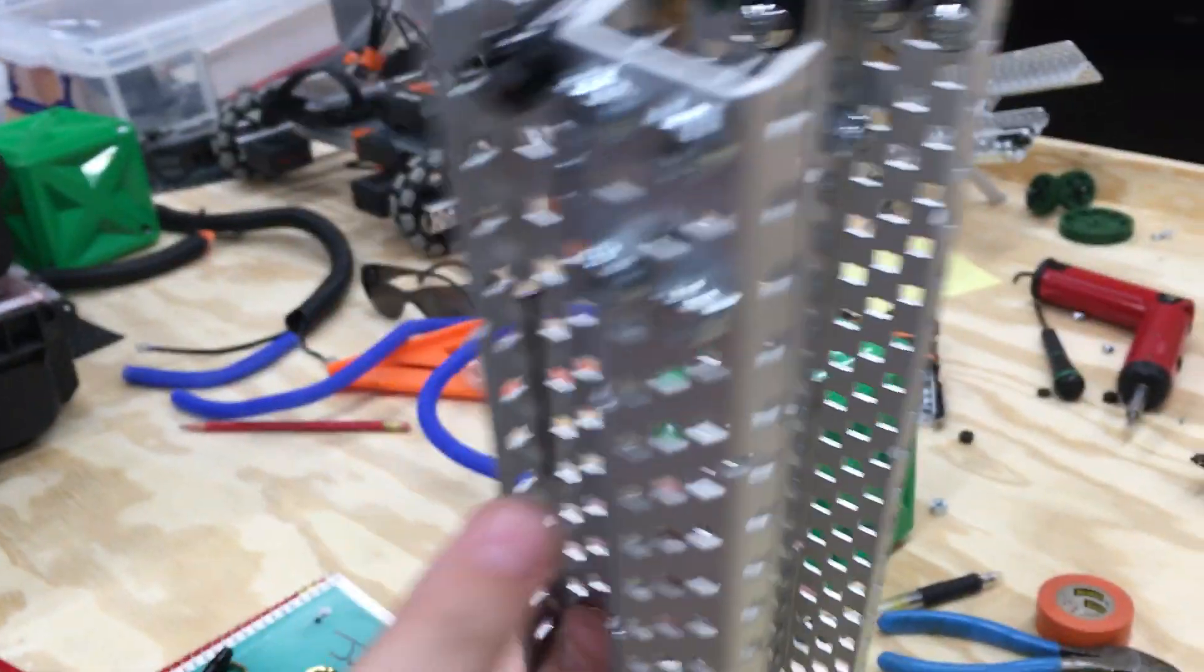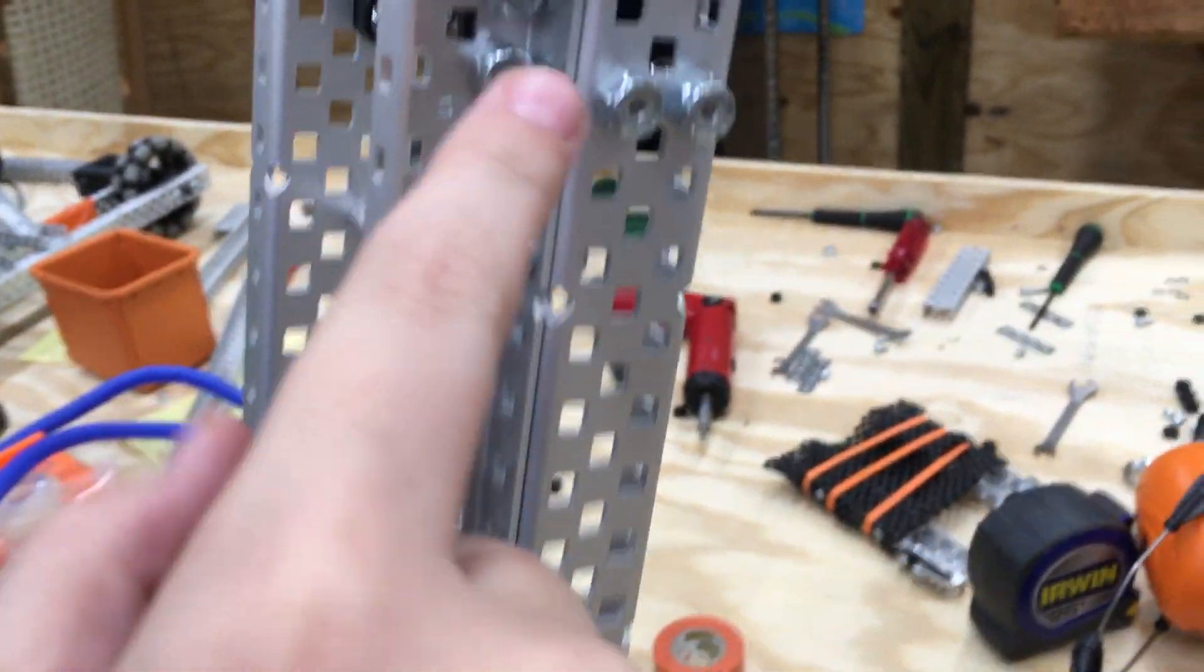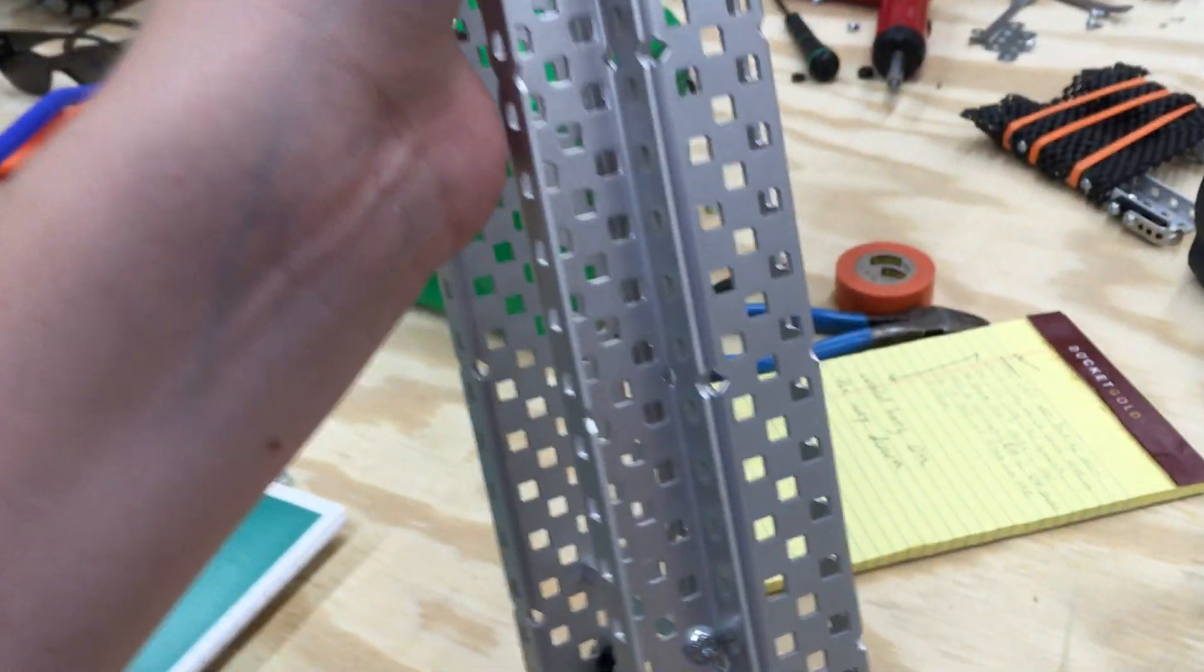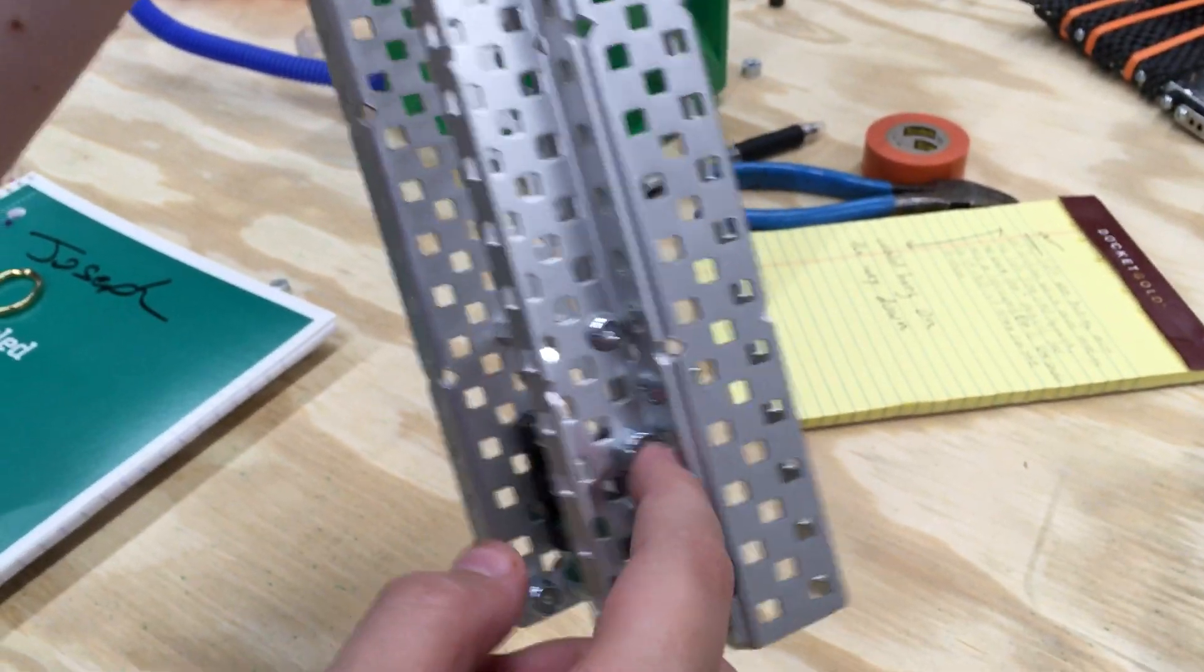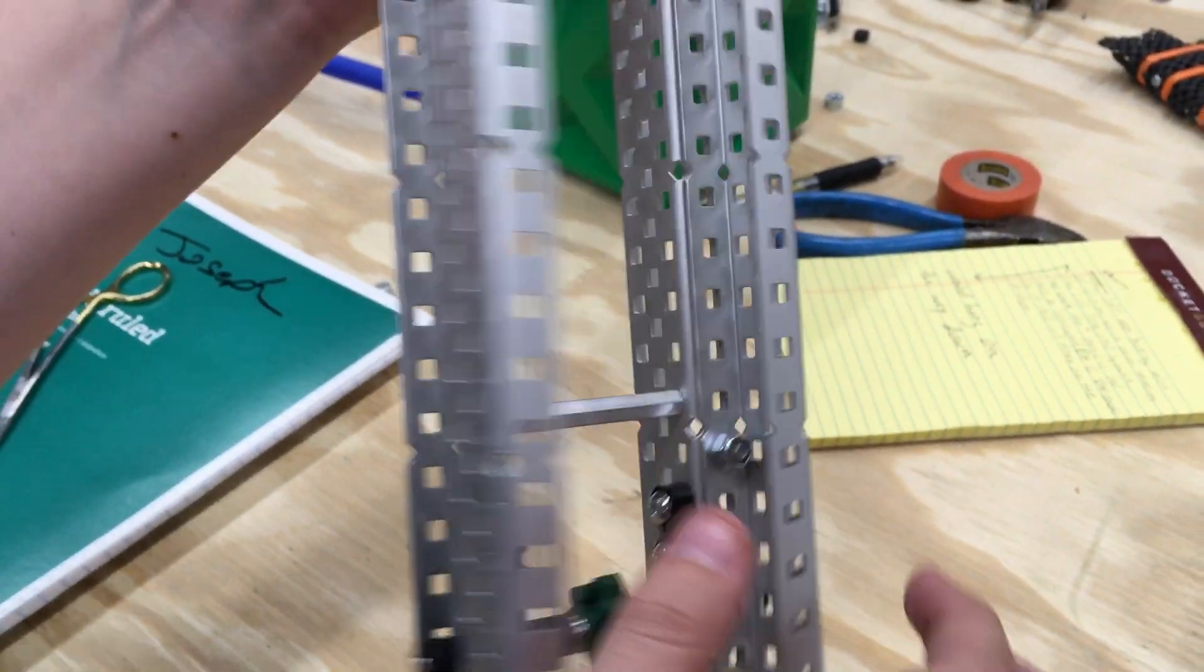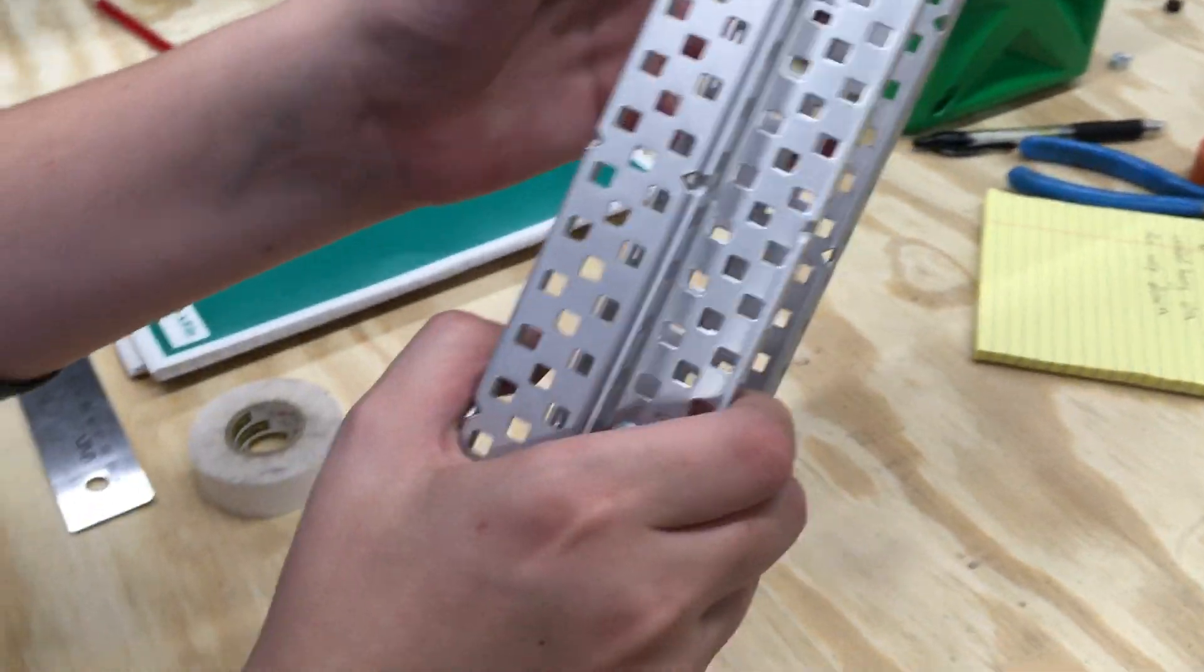To connect the two bys, yes, we used two bys to connect them. We had some screws on the fifth hole, on each end, on both sides. Using nylock, because we only use nylock.